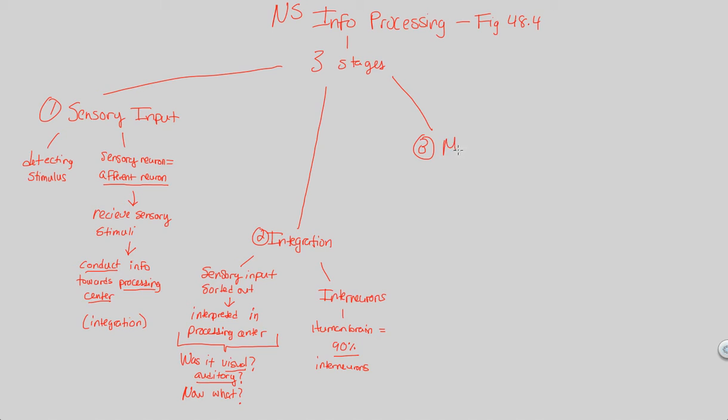Stage three is referred to as a motor output. Sensory input, something has entered the system, the nervous system. It was processed and integrated in the brain usually, and now there's going to be a specific motor output response. Essentially, the motor output is the answer to this question: What is the appropriate response to the stimulus, whatever the stimulus was?